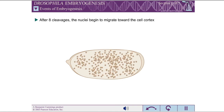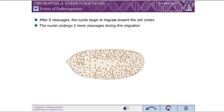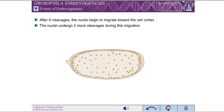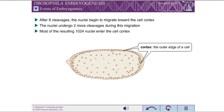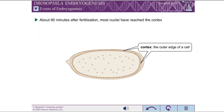After eight cleavages, the resulting 256 nuclei begin to migrate to the outer edge of the cell. During this migration, the nuclei undergo two more cleavages, resulting in 1,024 nuclei. Most, but not all, of these nuclei enter the cortical regions of the egg. About 90 minutes after fertilization, the majority of the nuclei have reached the cortex.